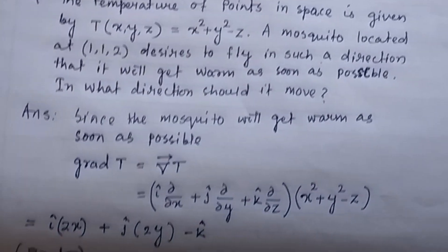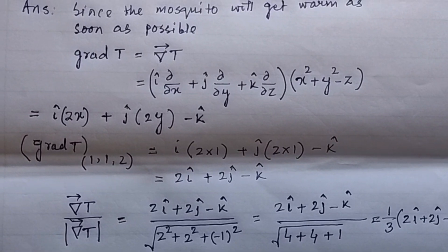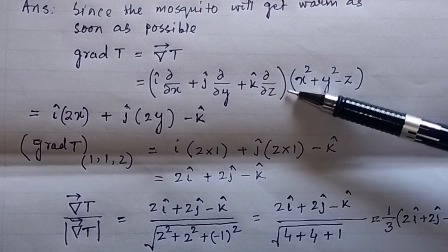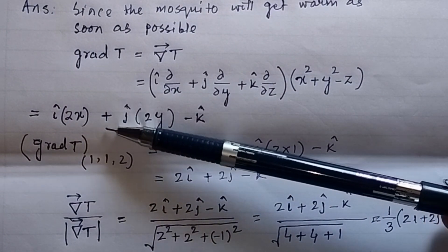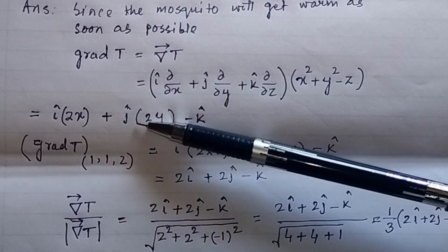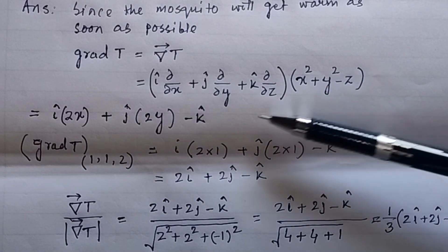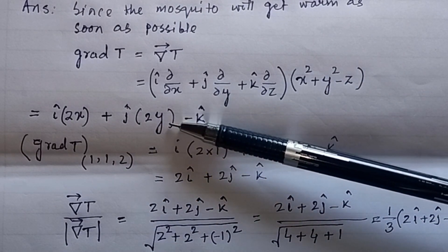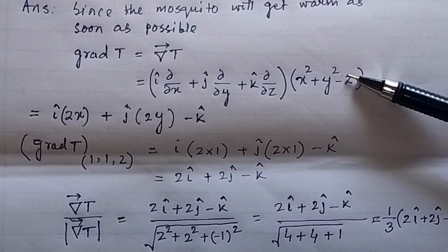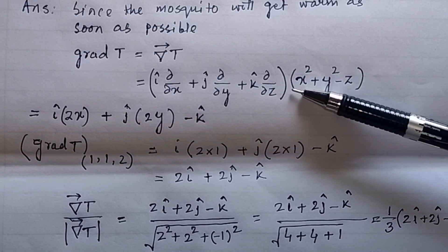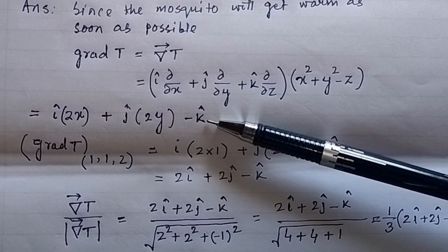If we find out the partial derivative of x squared with respect to x, that will be equal to 2x. Similarly, for the j-component, partial derivative of y squared with respect to y is 2y, and partial derivative of z with respect to z is equal to 1, so here minus k-cap.